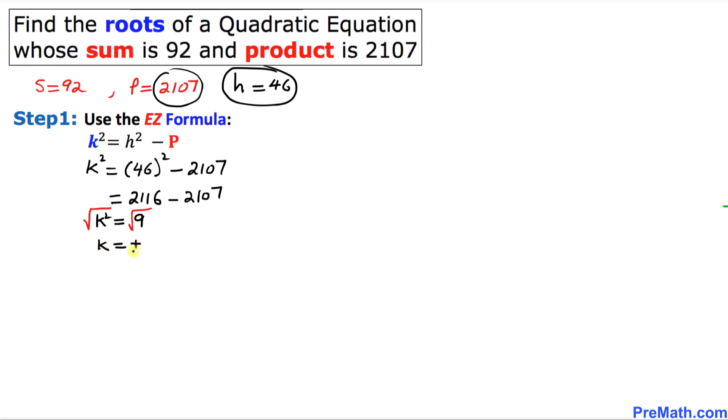k is going to be simply positive or negative 3. So this is our k value. So in our final step, our roots are h, in our case h is 46, plus or minus k, and k is positive or negative 3.